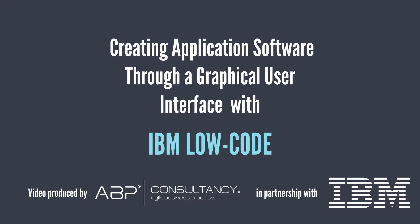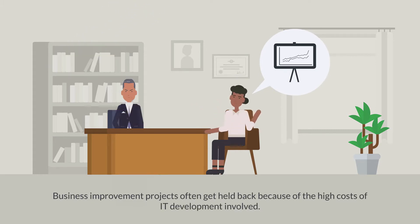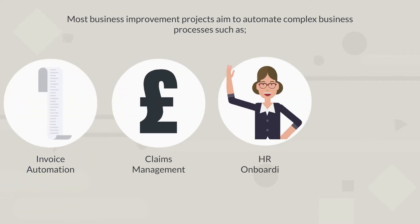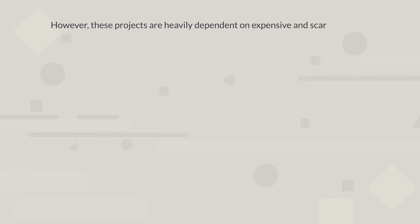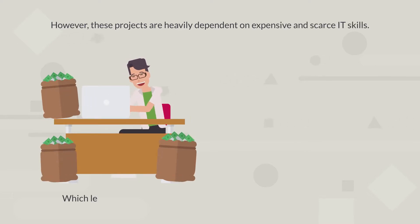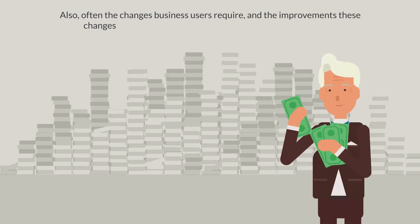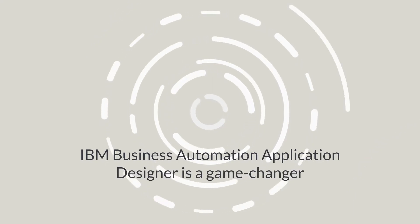Creating application software through a graphical user interface with IBM low-code. Business improvement projects often get held back because of the high costs of IT development involved. Most business improvement projects aim to automate complex business processes such as invoice automation, claims management, HR onboarding, compliance projects, and many more. However, these projects are heavily dependent on expensive and scarce IT skills, which leaves business users waiting forever to achieve efficiencies. Often, the changes business users require do not justify the investment needed for IT.